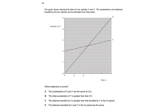Question ten: the graph shows velocity-time graphs for two vehicles X and Y. The accelerations and distances traveled by the two vehicles can be estimated from these plots. Which statement is correct? Acceleration is the gradient of a velocity-time graph, so the accelerations of X and Y are not the same at 2.5 seconds — they have different gradients at that point.